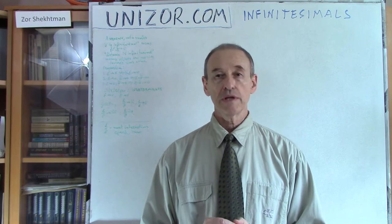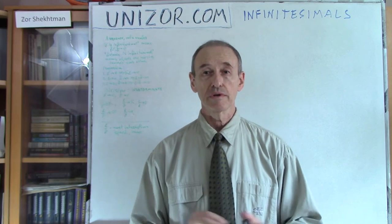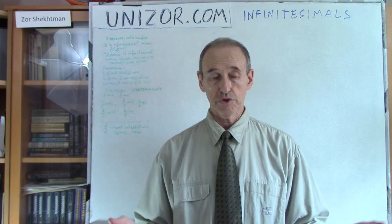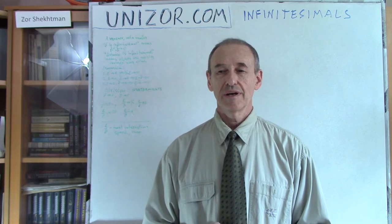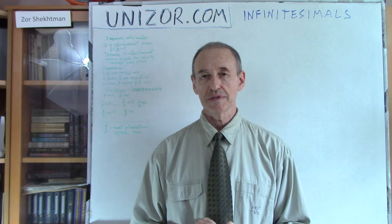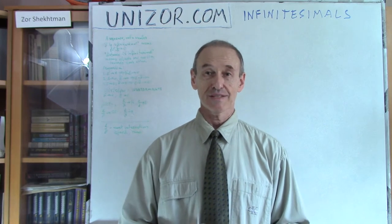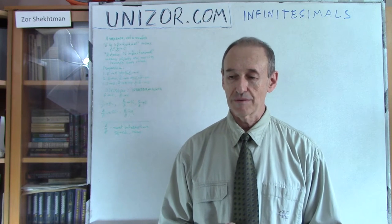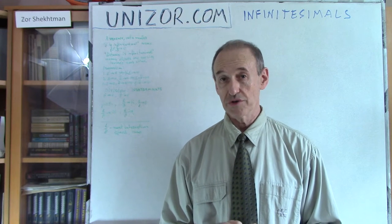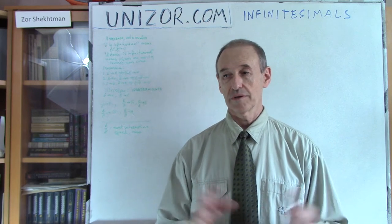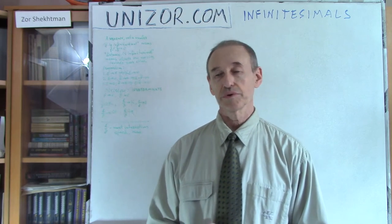Back to infinitesimals. They play a rather special role among all the different converging sequences. There are sequences which converge to 1, to 25. Why did we decide to separate sequences which converge to 0 into a special category and give them the special name 'infinitesimals'? Well, there is a very important role which these converging sequences play — not only in mathematics, but in many different subjects like physics or chemistry. So it's very, very important.